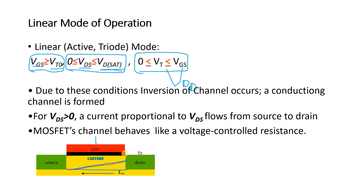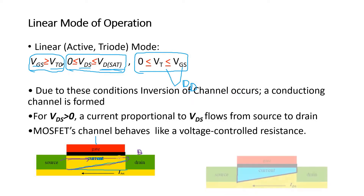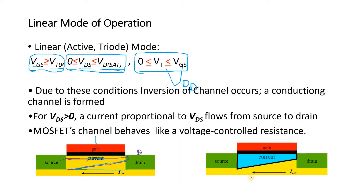The channel is not uniform — we are applying certain potential at the drain, which cancels out some of the potential near the drain. As we move away from the drain towards the source, the effect of drain voltage is reduced and you can have a full channel near the source. Once the channel is created and potential is applied at drain and source, an electric field is created, causing electrons to move from source to drain. The movement of electrons is from source to drain, and conventional current flows in the opposite direction.